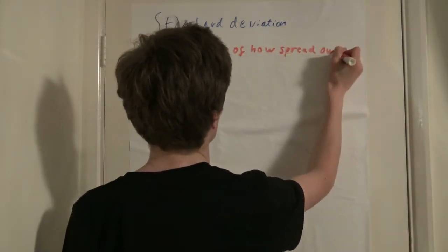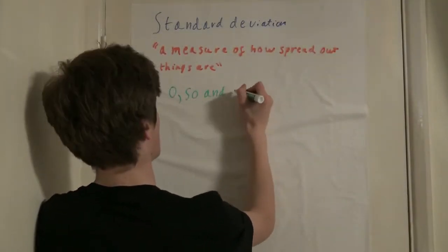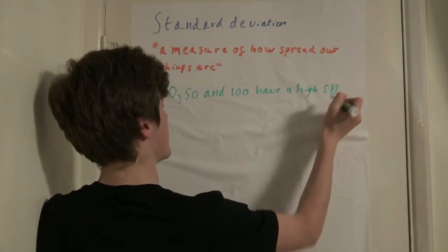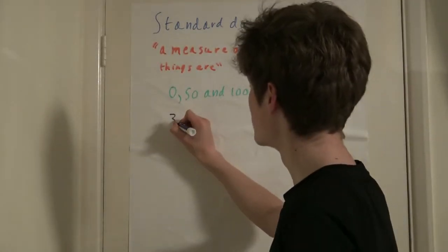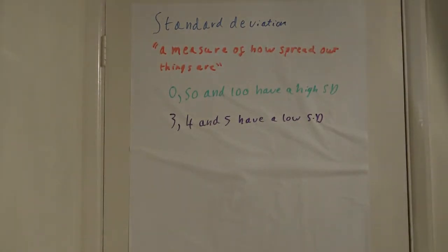Standard deviation is a measure of how spread things are. For example, from just looking at these pieces of data, you can assume that 0, 50 and 100 have a high standard deviation due to how spread they are, whereas 3, 4 and 5 do not.